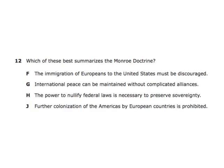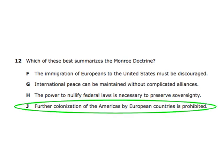Which of these best summarizes the Monroe Doctrine? Further colonization of the Americas by European countries is prohibited. The Monroe Doctrine said European powers cannot come to our side of the world — the Western Hemisphere, with North and South America — and try to colonize or take control of land. We prohibited that.